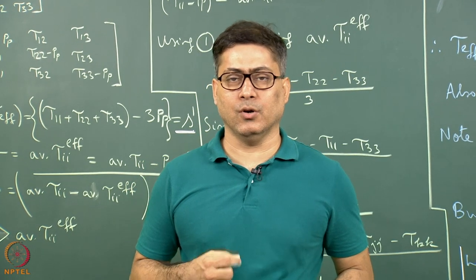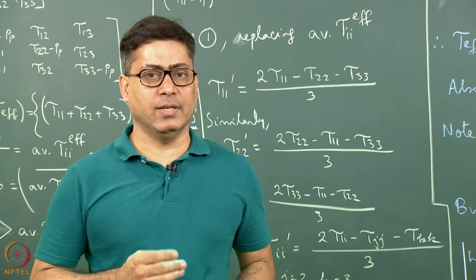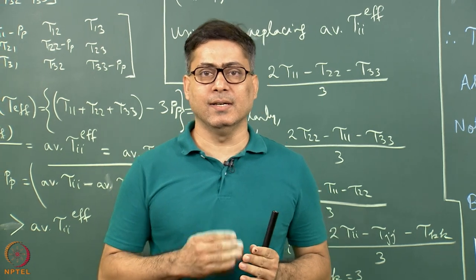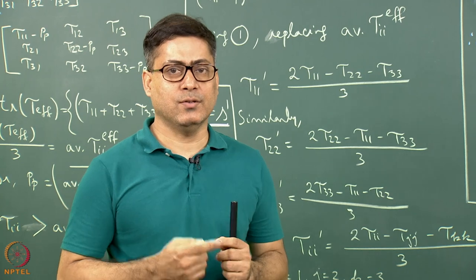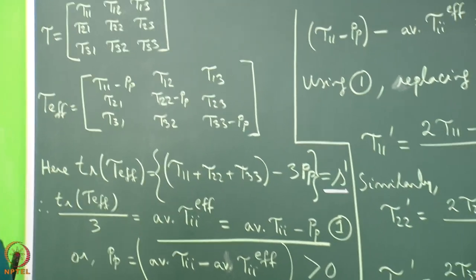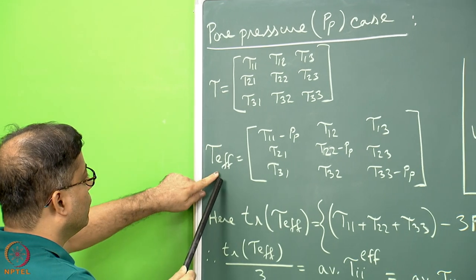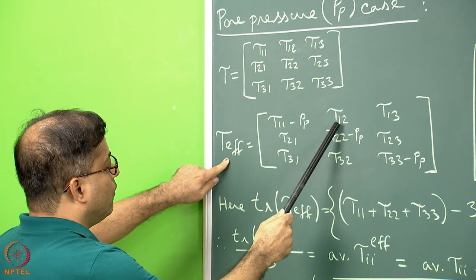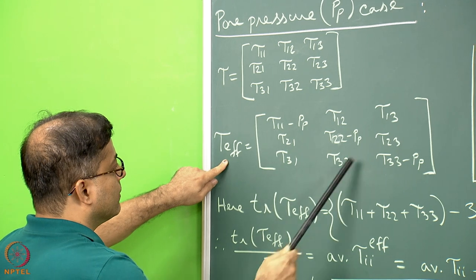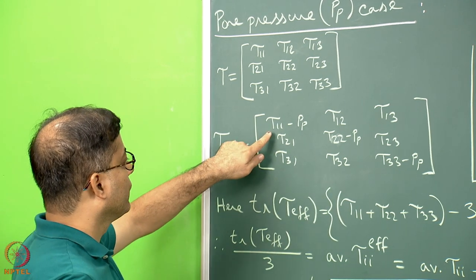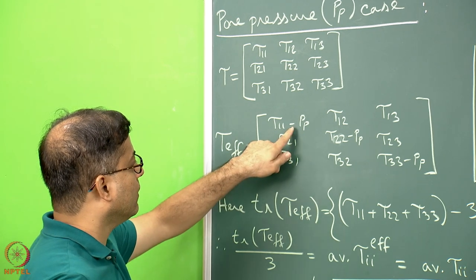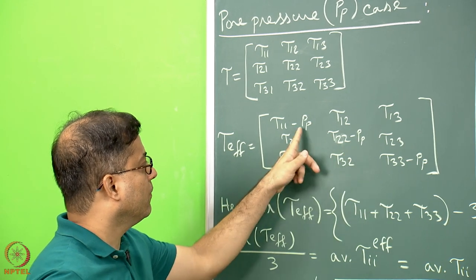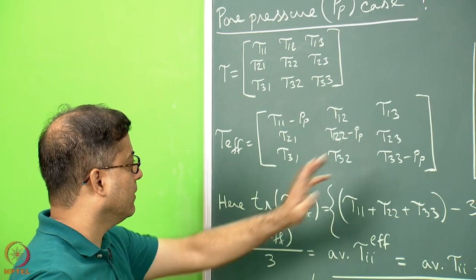We have seen how pore pressure alters the stress matrix. In the pore pressure case, tau is altered to tau_effective. The normal stress terms become tau11 minus PP, tau22 minus PP, tau33 minus PP, where PP is the pore pressure. The shear stress terms tau12, tau13, tau21, tau23, tau31, tau32 are not altered, since pore pressure only counteracts the compressive normal stresses. We place PP with a minus sign in the expression for tau_effective.